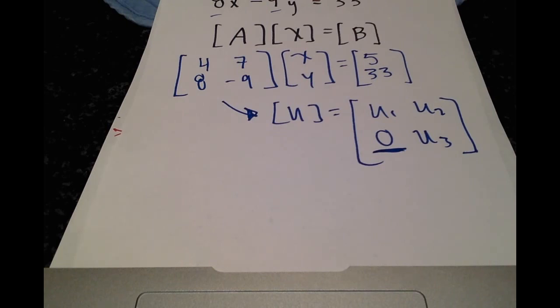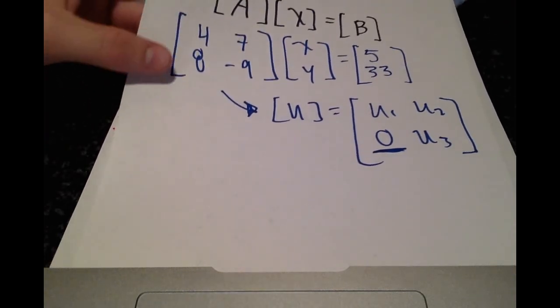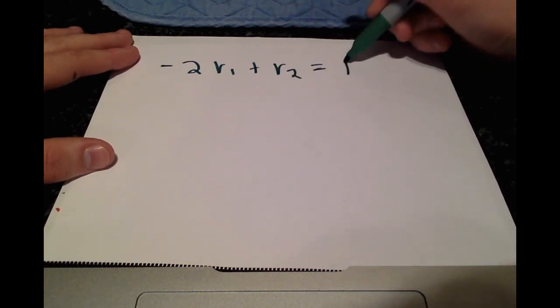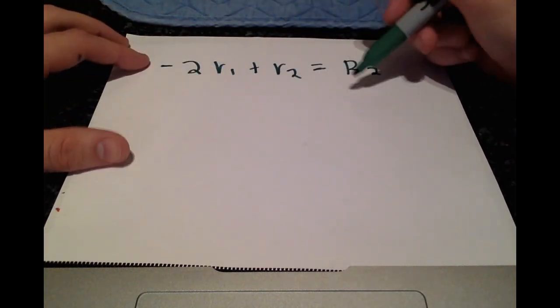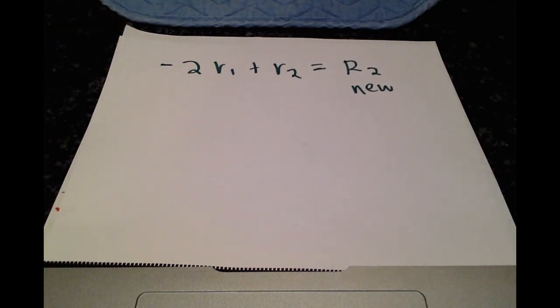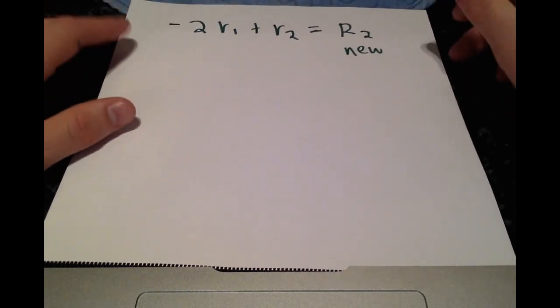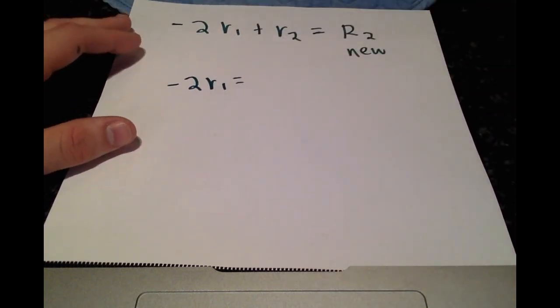You might already be thinking, oh hey, if we multiply row 1 by negative 2 and add that to row 2, that will cancel out the 8. And if you're thinking of that, then great job, you are correct. You're on the right track. What I like to do is write out exactly what we're doing before we do it. So we're multiplying row 1 by negative 2, adding that to row 2 and getting our new row 2. Okay.